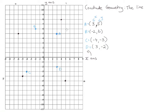A is in the first quadrant and both numbers are positive. B is in the second quadrant — the first number is negative but the second is positive. C is in the third quadrant and both numbers are negative. D is in the fourth quadrant — the first number is positive and the second is negative. So you'll see it written as (+,+), (-,+), (-,-), and (+,-) for each quadrant.